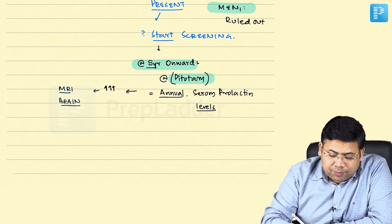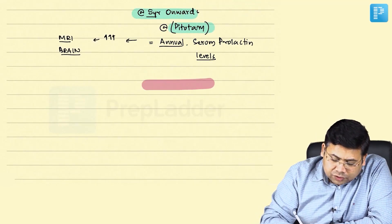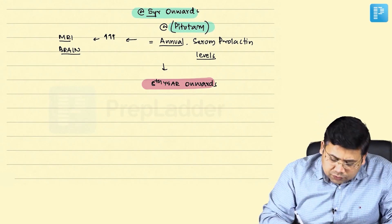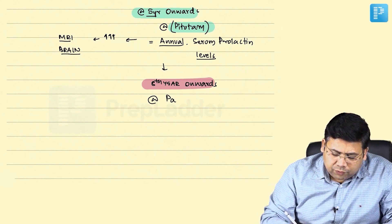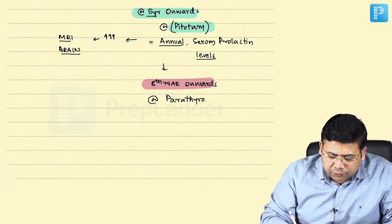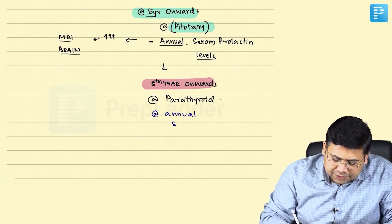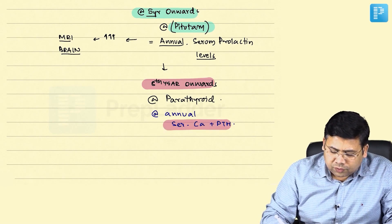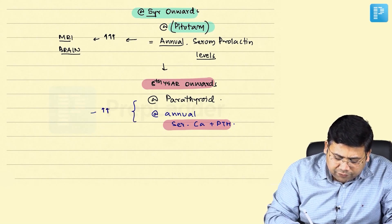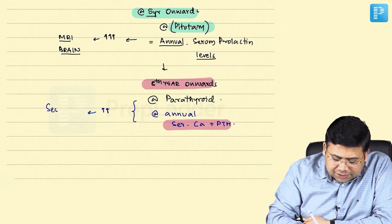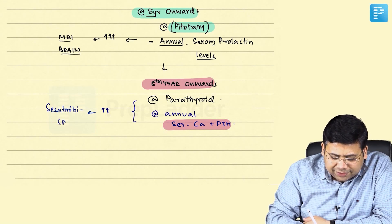As the child grows, from the eighth year onwards you add parathyroid screening. For parathyroid screening, you measure annual serum calcium plus parathyroid hormone (PTH). If these are found to be elevated, the diagnosis of hyperparathyroidism is confirmed, and you proceed to a sestamibi SPECT scan for localization.